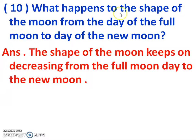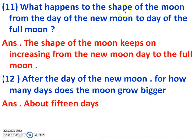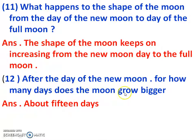Question 6: When does the night start? Answer: Night starts with sunset. Question 7: What are the phases of the moon? Answer: The changing shapes of the moon are called the phases of the moon. Question 8: What is full moon day? Answer: The day on which the moon is completely round is called the full moon day. Question 9: What is new moon day? Answer: The day on which the moon cannot be seen is called the new moon day. Question 10: What happens to the shape of the moon from full moon to new moon? Answer: The shape of the moon keeps on decreasing from the full moon day to the new moon. Question 11: What happens from new moon to full moon? Answer: The shape of the moon keeps on increasing from the new moon day to the full moon. Question 12: After the day of new moon, for how many days does the moon grow bigger? Answer: About 15 days.